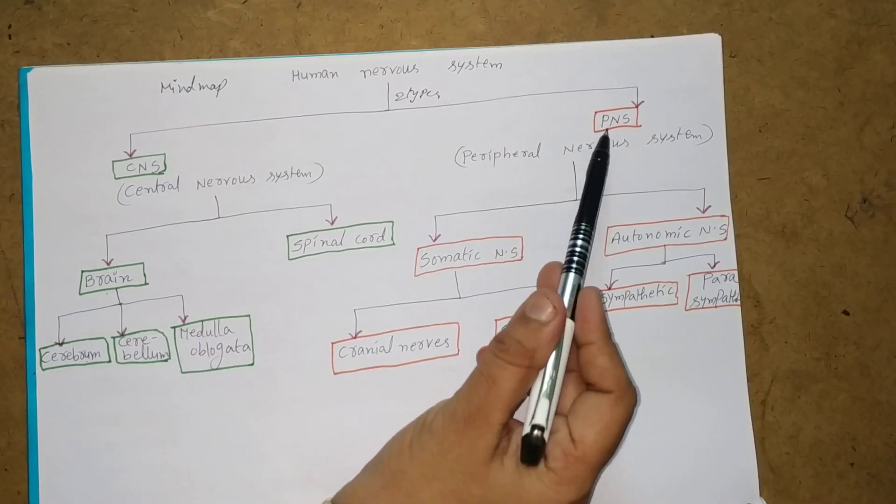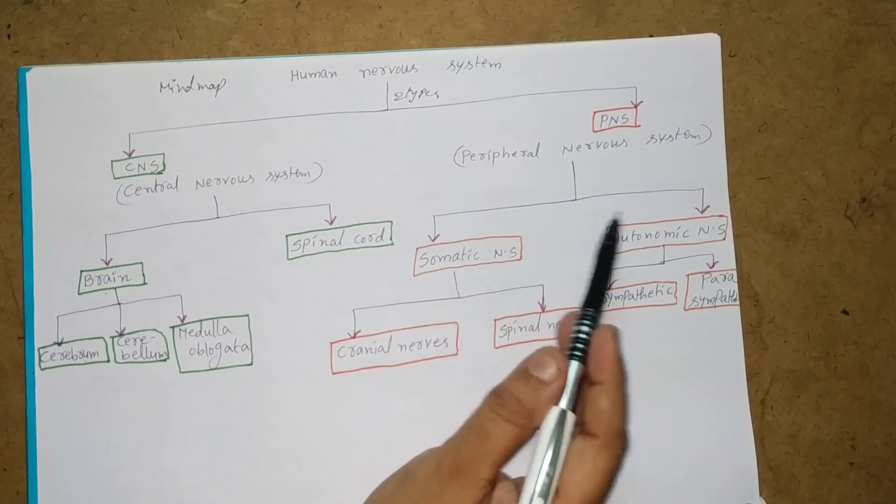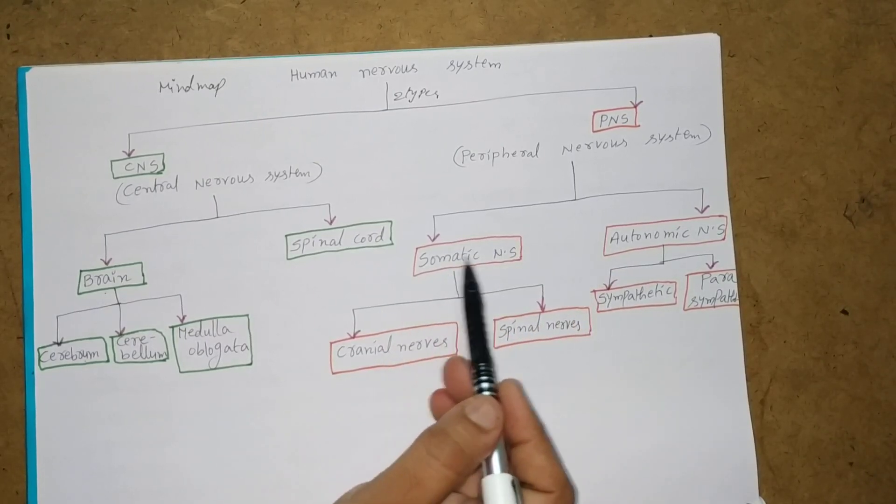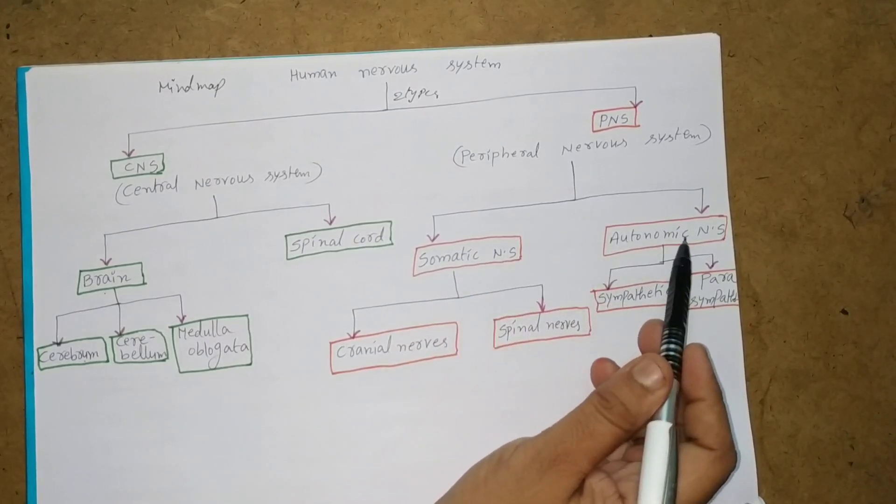Next, Peripheral Nervous System has two types: Somatic Nervous System and Autonomic Nervous System.